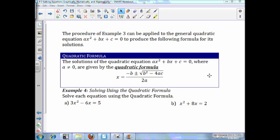The procedure of example 3 can be applied to the general quadratic equation ax squared plus bx plus c equals 0 to produce the following formula for its solutions. This is a quadratic problem you should have seen already, so it should be nothing new. The solution to the quadratic equation ax squared plus bx plus c equals 0, where a does not equal 0, are given by the quadratic formula. x is equal to the opposite of b plus or minus the square root of b squared minus 4ac, all of that over 2a.